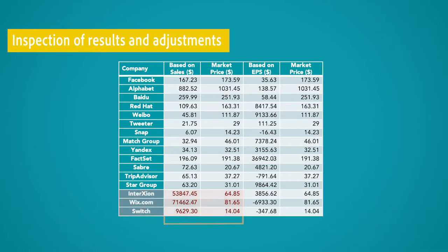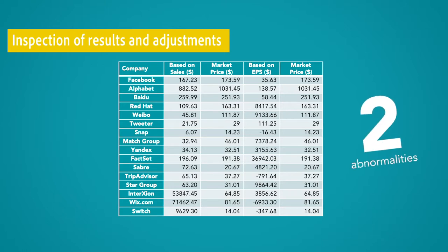Once we have discovered abnormalities in the estimates, we need to make adjustments and perform further analysis until we see reasonable values. So how can we adjust the results? We can have several adjustments depending on the estimated results. In our case, we have two abnormalities. Therefore, the adjustments can be as follows. The first adjustment is to ignore all the estimates that are based on earnings, because they are not realistic.